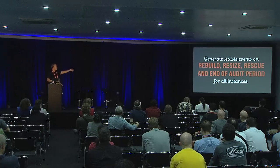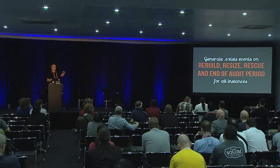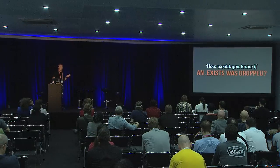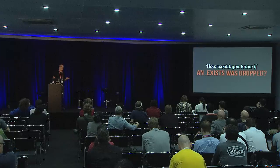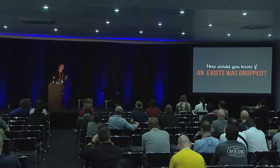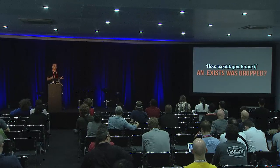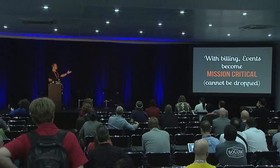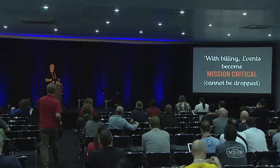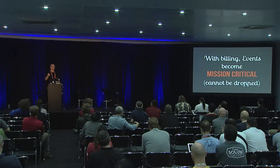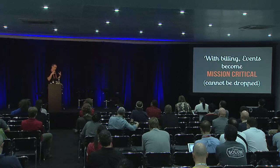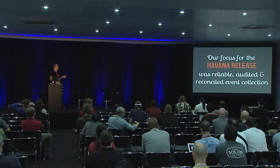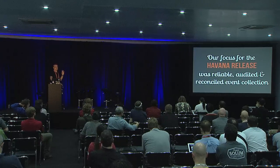The problem we had, though, was: how would you know if an exist record got dropped? Do we bill for that? Because if we don't see an exist record, it probably means the instance isn't around anymore — but an event can get dropped. So the first thing we had to do in order to use this for billing validation was make sure that events were first-class citizens, that we couldn't drop those events. It's different than a sample — it's not a disposable thing we can send across UDP. The event was something we got into the queuing system and locked down on. We make sure it's a very careful handoff from one system to the next. Our focus for Havana and StackTach was to make sure we had reliable, audited, and reconcilable event collection.